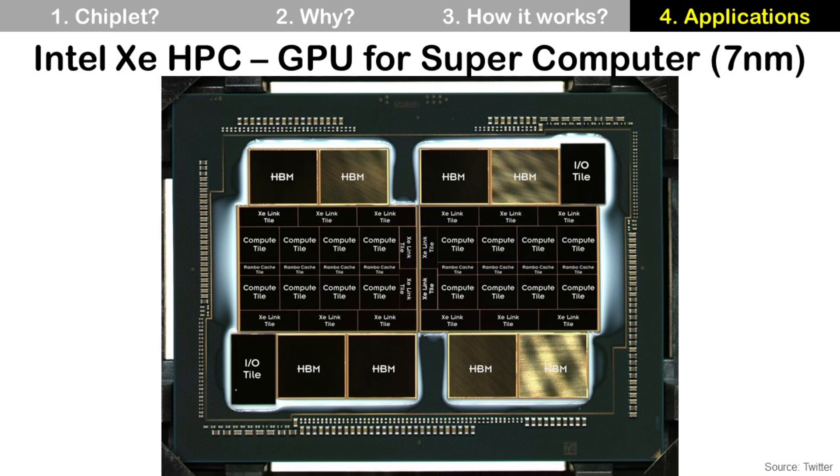eight Rambo cache tiles using Intel's 10nm enhanced super fin process, 11 EMIB links made by Intel, two XE link IO tiles made by a foundry, eight HBM memory stacks produced by a DRAM manufacturer. It would be impossible to build a single chip with this 47 component.